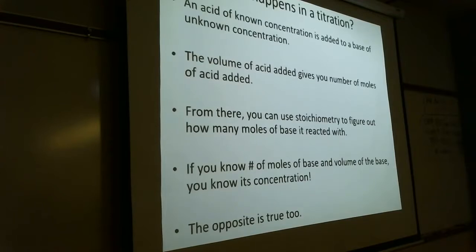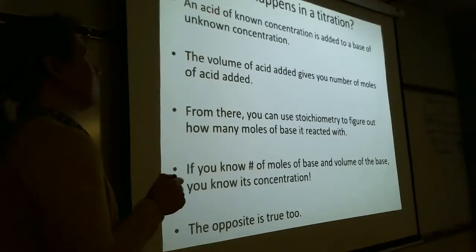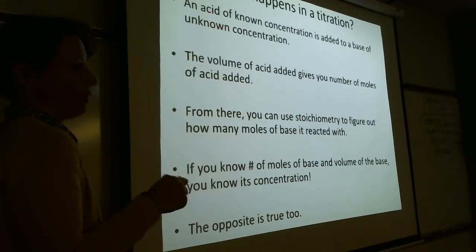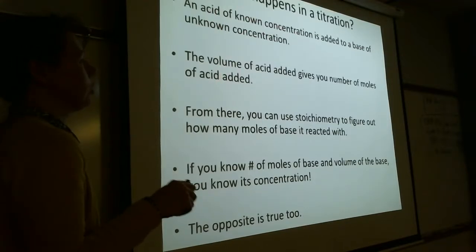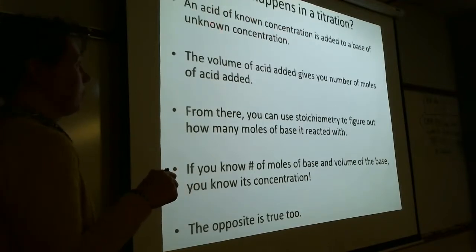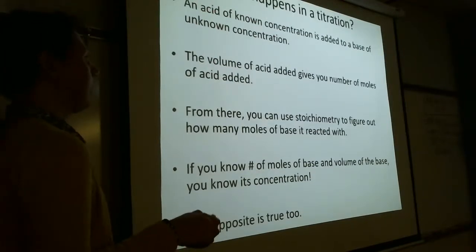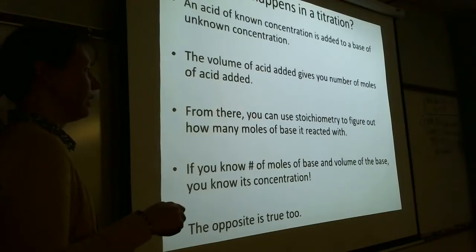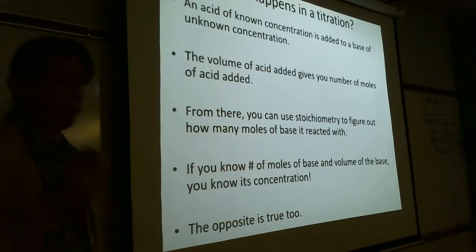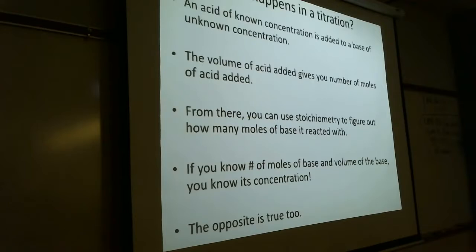During a titration, we take an acid of known concentration and add it to a base of unknown concentration. We know the molarity and the volume we use — measured with a burette. Knowing molarity and volume gives us number of moles. From moles, we do stoichiometry to get moles of the base. Then, knowing the volume of the base, molarity equals moles over volume. You can also go the other direction — use a base to titrate an unknown acid.